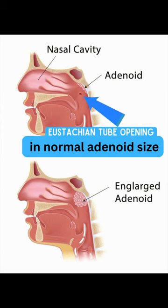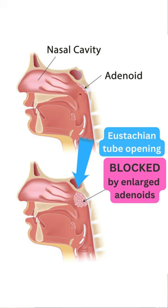The eustachian tube is the opening to the back of the eardrum. You can understand why an enlarged adenoid, if it blocks the eustachian tube, might cause that person to have a lot of ear infections.